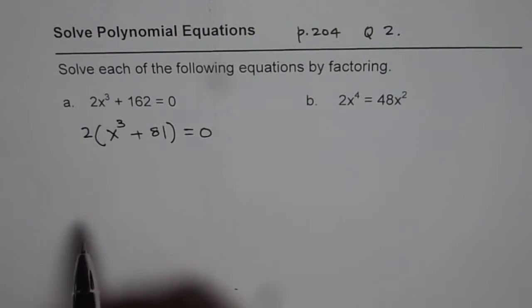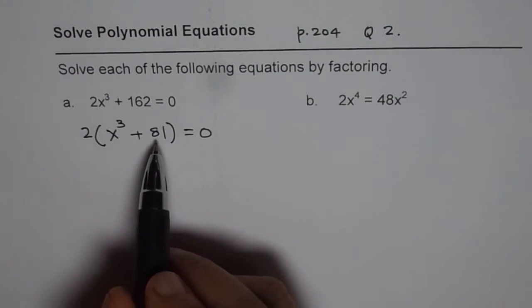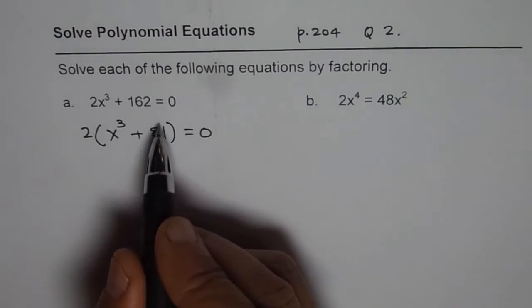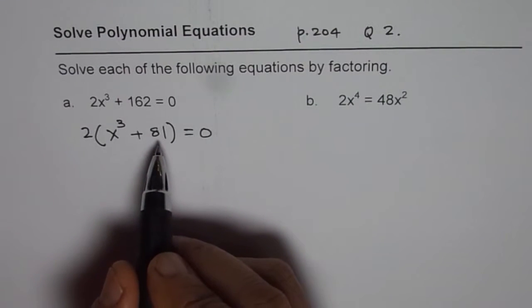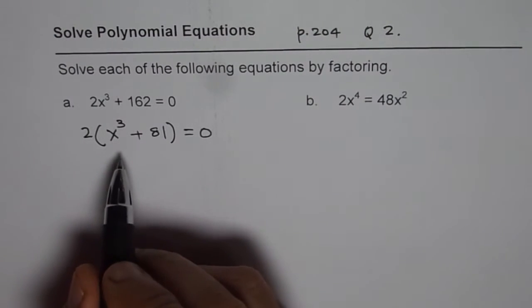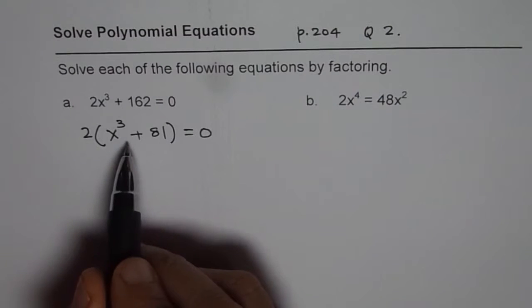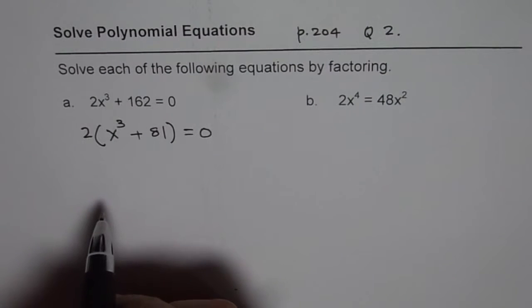Now, 81 is not a perfect cube. 3³ is 27, 3⁴ is 81. Remember that, 81 is 3⁴, not cube of any number. And therefore, what we should do at this stage is we have already factored, we took a common factor of 2, so we can equate each factor to 0.